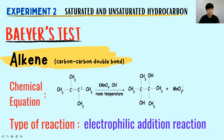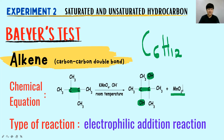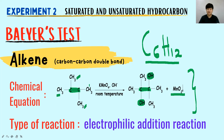Let's look at more examples of alkene. You have a carbon-carbon double bond, the double bond breaks into a single bond, and 2 OH groups are added to the carbons that held the double bond, producing the brown precipitate MnO₂. For example, alkene C₆H₁₂ — a 6-carbon alkene with 12 hydrogens. The number of carbons may change, but the chemical equation remains the same because we only focus on the carbon-carbon double bond.